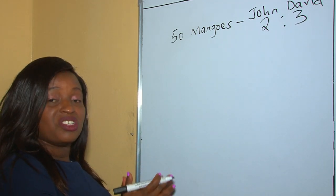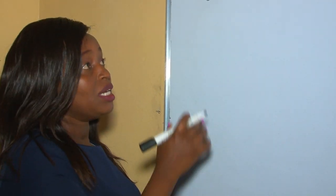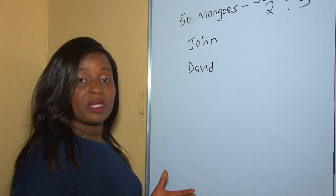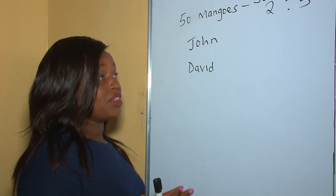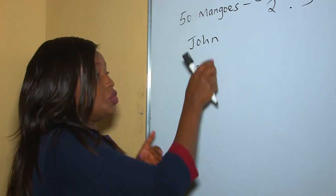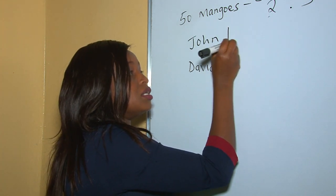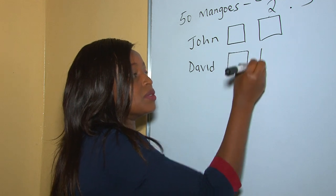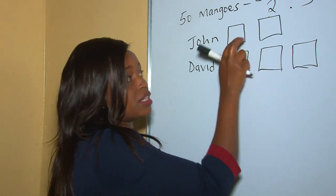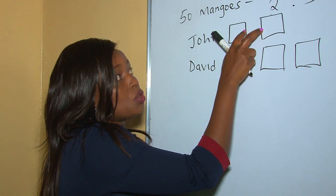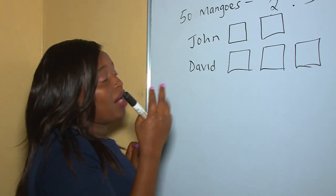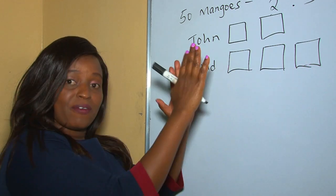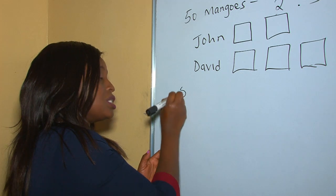Remember, sharing is just basically division. John gets two parts and David gets three parts. So for every two mangoes John receives, David receives three. Now let's get the total number of parts: one, two, three, four, five — there are five parts. So we divide the mangoes by five.